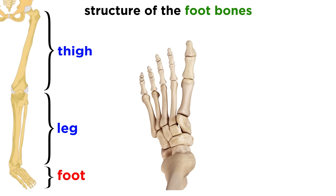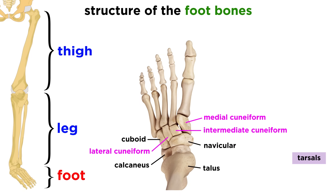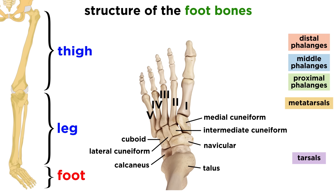Then we get to the foot, which is similar to the hand. We see the tarsus, made of seven bones called tarsals. The biggest two, the talus and calcaneus, make up the ankle. Then there is the cuboid, the navicular, and the medial, intermediate, and lateral cuneiform bones. Next we see the metatarsus with five long metatarsals, again numbered one through five. Also like the hand, we see fourteen phalanges, three per toe, except two for the big toe, also known as the hallux.